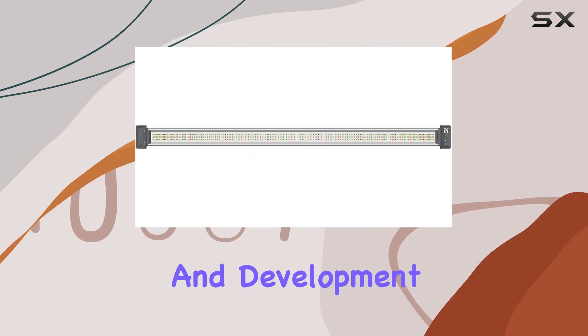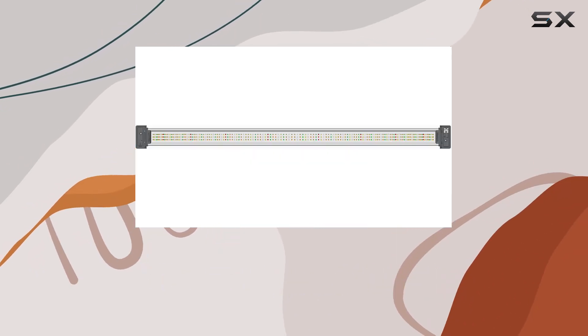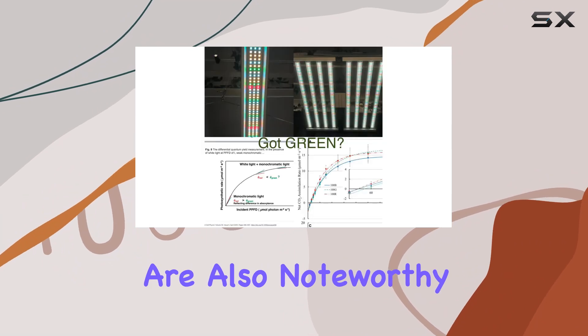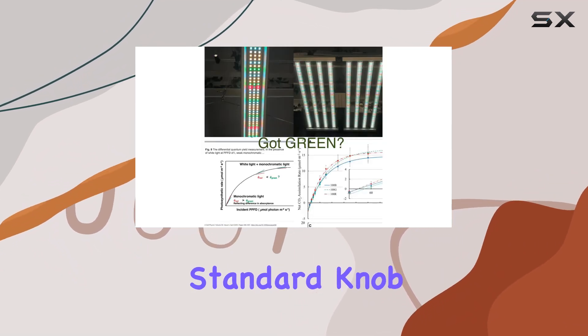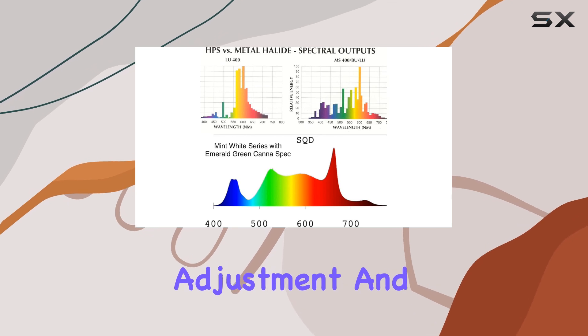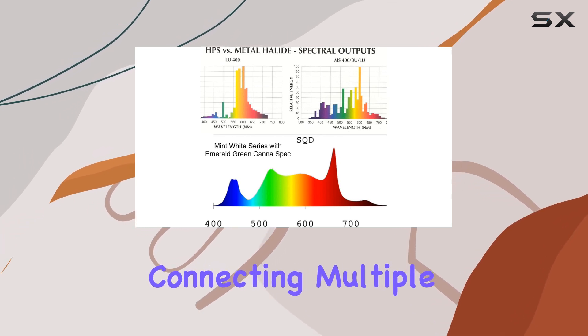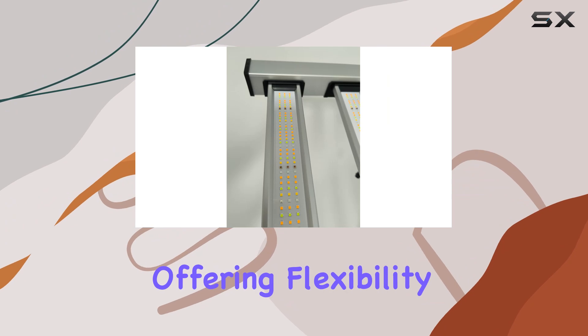The design features of the Mammoth Lighting Six Bar are also noteworthy. It includes standard knob dimming for easy light intensity adjustment and an RJ port for connecting multiple lights to an external controller, offering flexibility in managing your indoor garden's lighting environment.